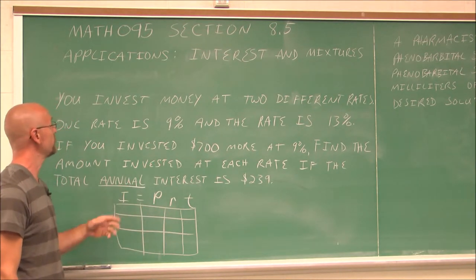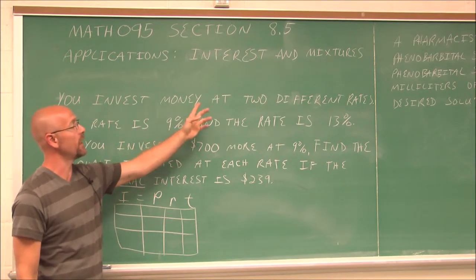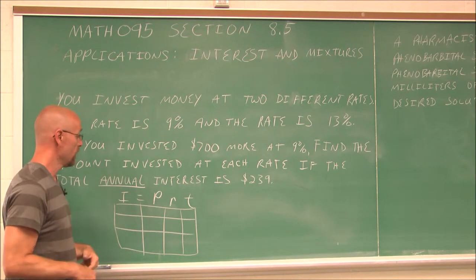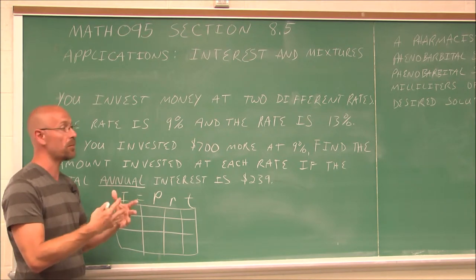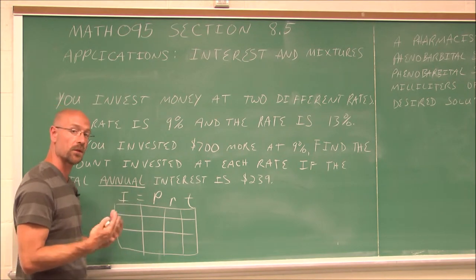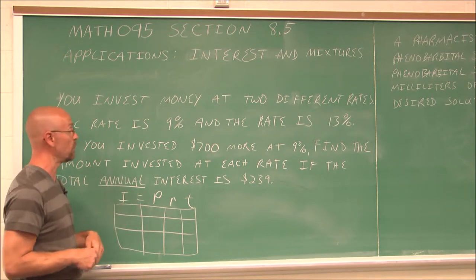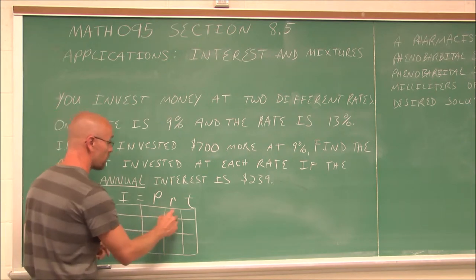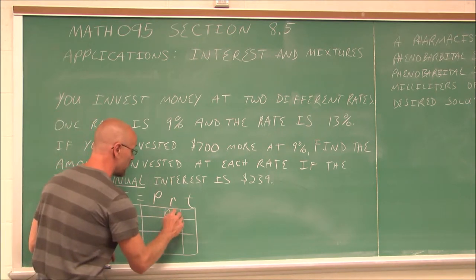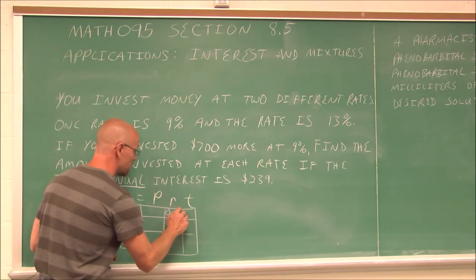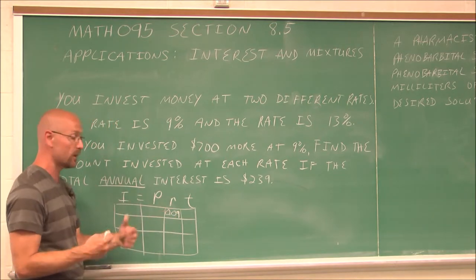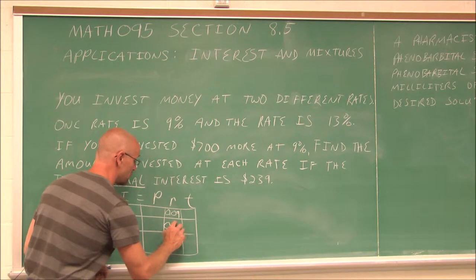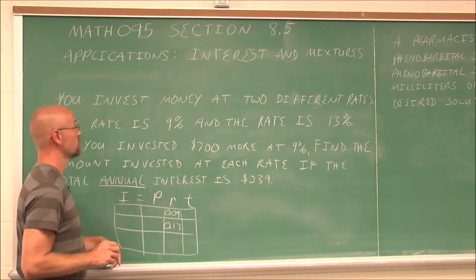I'm going to take the given information I have. It says we invest money at two different rates. So I have two different principals. So I'm going to call one principal, maybe I assign the variable x. And the other principal, I am going to assign the variable y. So let's look at the first one. It says one rate is 9%. So I know a rate, 9%. And I'm going to convert that right now to a decimal, because that's what we have to do in order to work with decimals. And the other rate is 13%. So I just fill in my table with the given information.